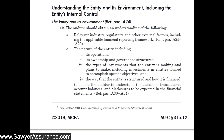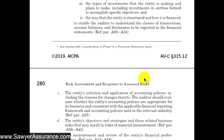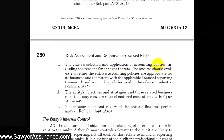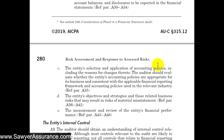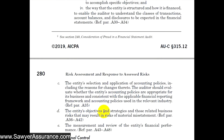In this video we're continuing our discussion of AU-C Section 315 for understanding the entity and assessing risk of material misstatement. We've been going through AU-C Section 315.12, understanding the entity and its environment. We've discussed gaining understanding of the industry, its regulatory environment, nature of the entity, and its selection and application of accounting policies. For this video we'll look at the entity's objectives and strategies and those related business risks that may result in risk of material misstatement.